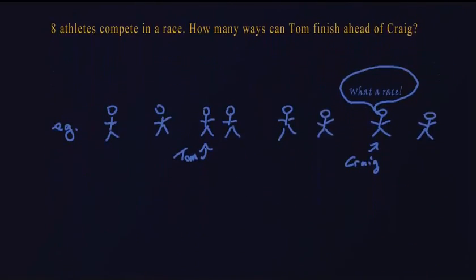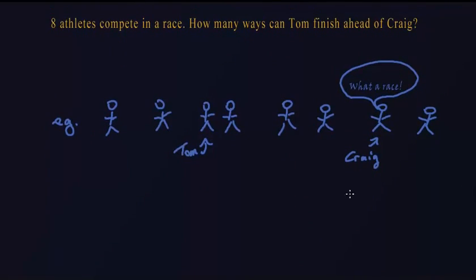Let's move on to our last question. There are eight athletes competing in the final 100-meter dash, and two of these athletes are called Tom and Craig. How many ways can Tom finish ahead of Craig?